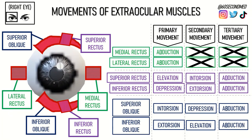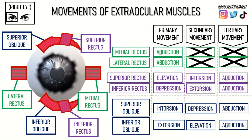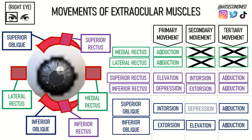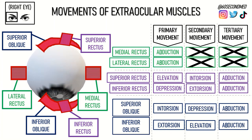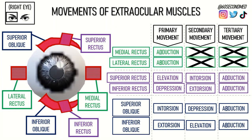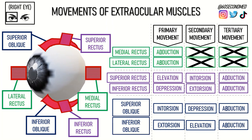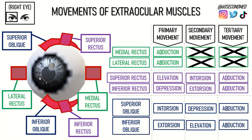Looking at the superior and inferior obliques, the primary movement for the superior oblique is to intort the eyeball, and the inferior oblique will extort. The secondary movement for the superior oblique is to depress the eyeball, and for the inferior oblique to elevate. The tertiary movement for the obliques is to work together to abduct the eyeball, due to their slightly more lateral attachment.